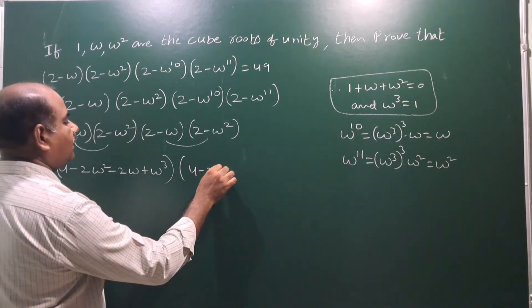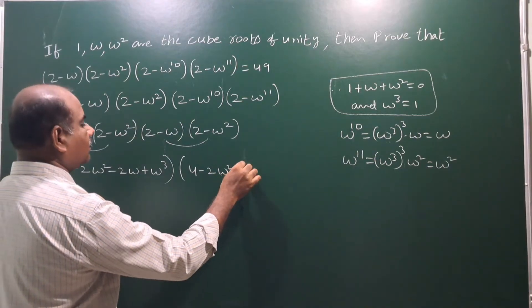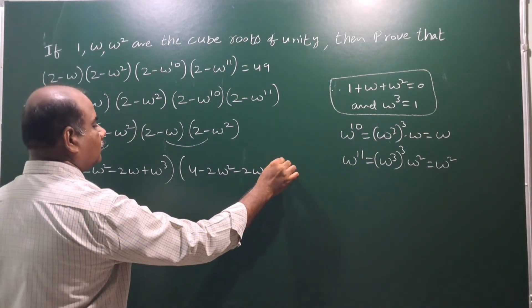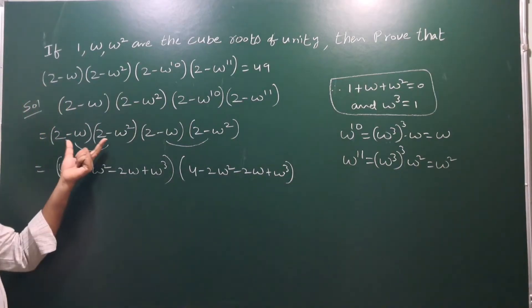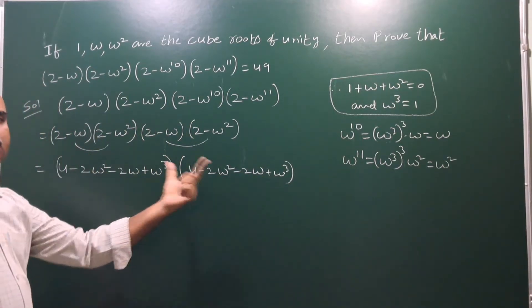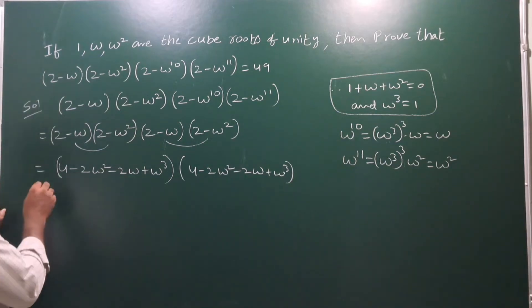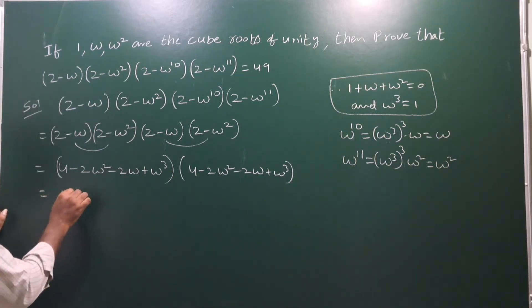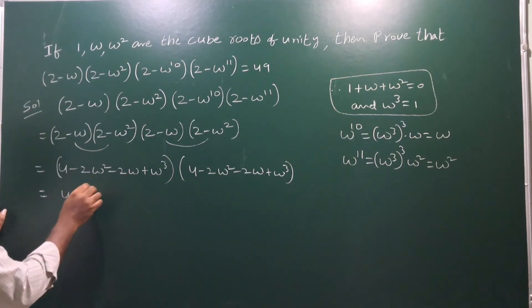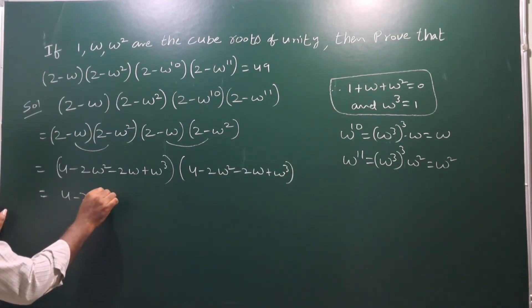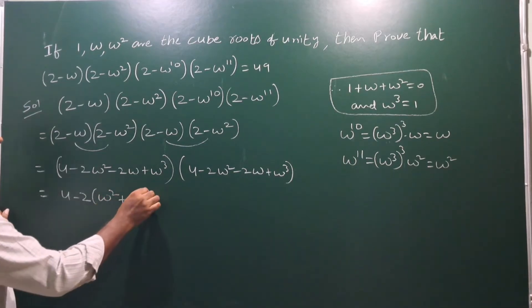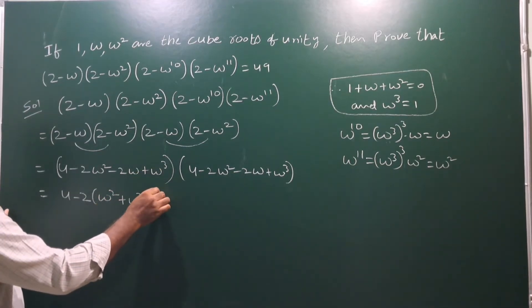So we get 4 - 2ω² - 2ω + ω³. Taking -2 as common from the middle two terms, we get 4 - 2(ω² + ω) + ω³, and we know ω³ = 1.